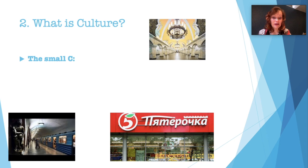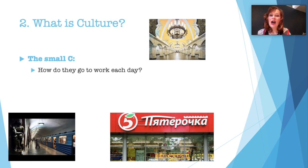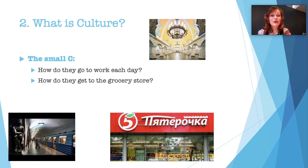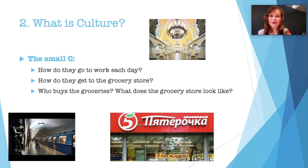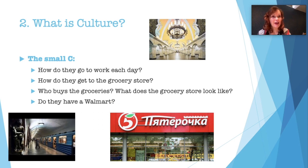For my students, small-c questions include: how do they go to work each day? How do they get to the grocery store? Who buys the groceries? What does the grocery store look like? Do they have a Walmart? Garza treats culture as the fifth skill — that sounds like being the fifth wheel on a wagon. I prefer to treat culture differently in my classroom.